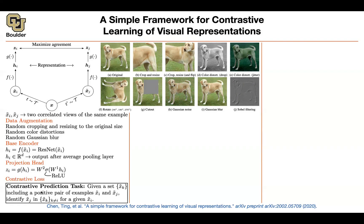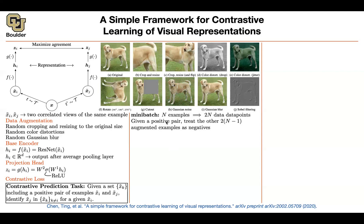Then you write down your contrastive loss, which is basically trying to find the correct answer among a couple of potential answers. You have a mini-batch of examples, and if you do data augmentation on them, it gives you 2N data points to work with. A pair of them is going to be positive because they are transformations of the same image, and the rest are going to be your negative examples.